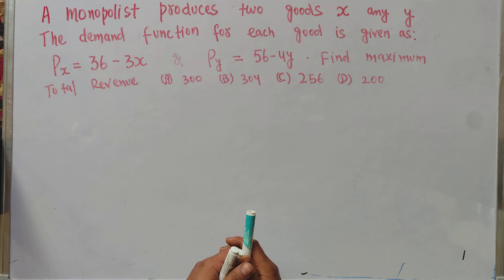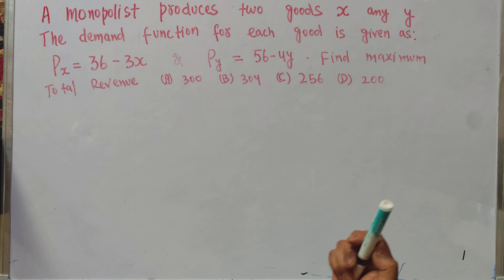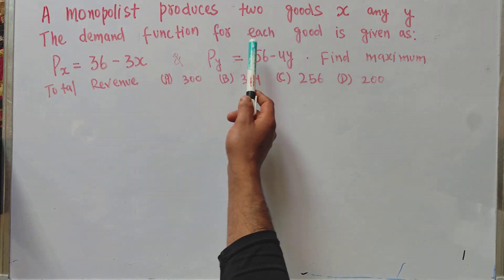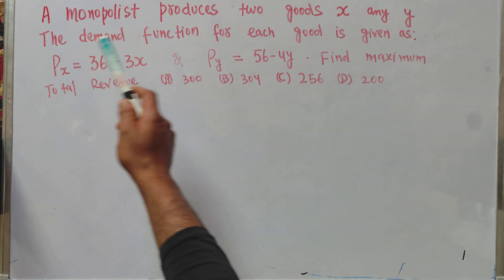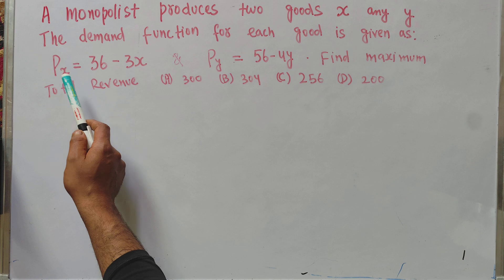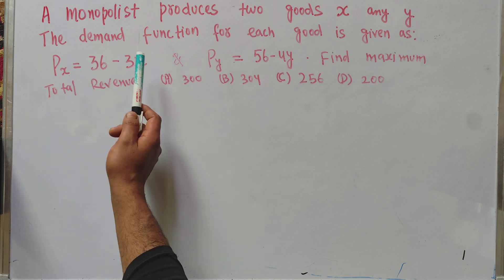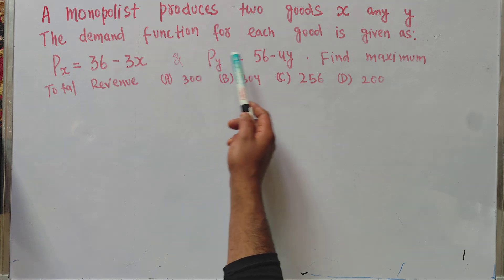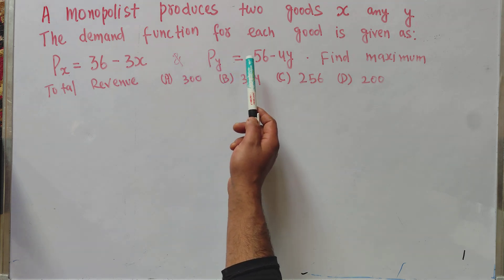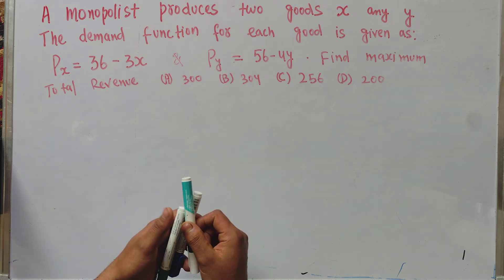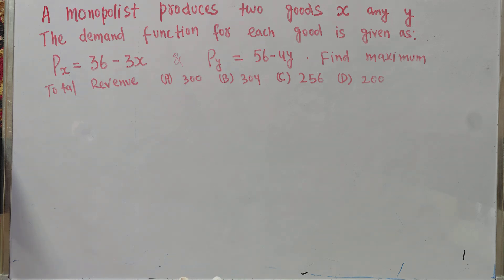Let us solve a question on how to find out the maximum total revenue for a monopolist who produces two goods. The question is: a monopolist produces two goods X and Y. The demand function for good X is given as P_x = 36 minus 3x, and the price of good Y is given by the demand function P_y = 56 minus 4y. We need to find the maximum total revenue from the options given.